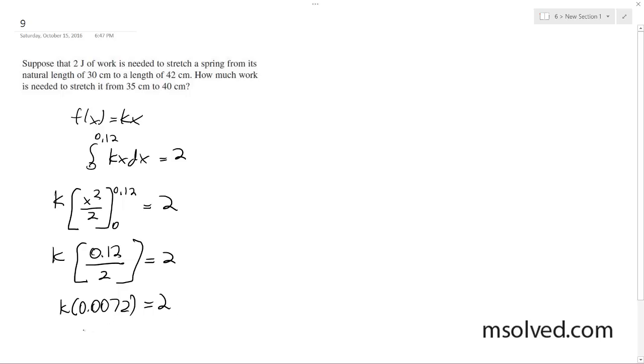And then finally, k is equal to 2 divided by 0.0072, which is equal to 2,500 over 9 in simplest form.